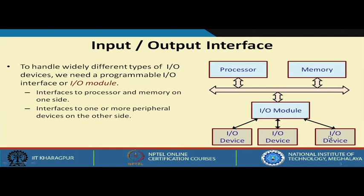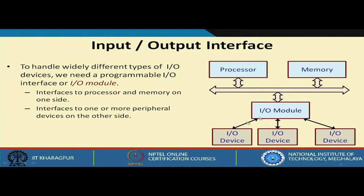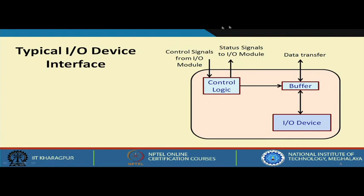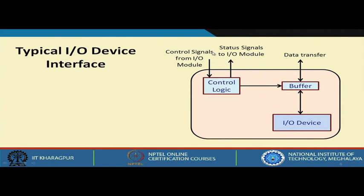Looking at a typical I/O device interface: the I/O module can send control signals, receive status signals, and perform data transfer. These arrows in the diagram carry all three kinds of signals — control, status, and data. Inside the I/O device interface, in addition to the I/O device itself, there is a buffer which temporarily stores data being transferred, and a control logic which controls the buffer and handles other circuitry. The status signal tells you whether the I/O device is ready and whether the next data word or byte is ready.